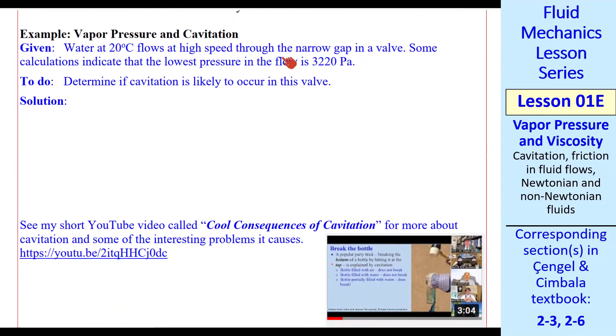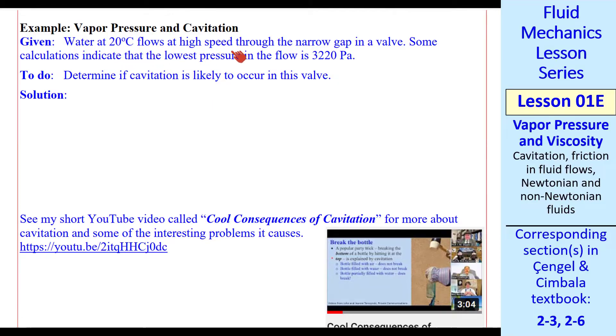Let's do a quick example. Water at 20 degrees C flows at high speed through the narrow gap in a valve. We find that the lowest pressure in the flow is 3220 pascals. Let's determine if cavitation is likely to occur. We look up PV or PSAT online or in some tables. At 20 degrees C, PV is 2.339 kPa.